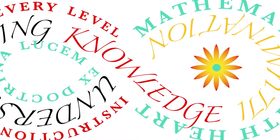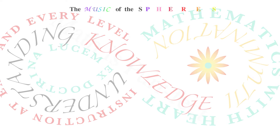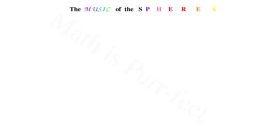Hello, this is Aloisa with Math Leopard, and welcome to the final chapter in the music of the spheres. Today we will look at the music of Uranus, Neptune, and Pluto. As their distances from the Sun are so vast, my illustration's scale will have to be inferred.